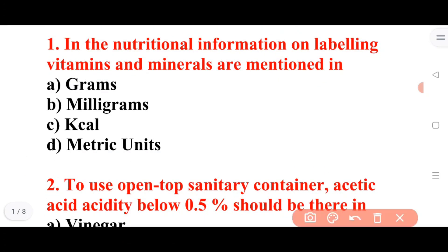First question: In the nutritional information and labeling, vitamins and minerals are mentioned in which units? Option A: grams. Option B: milligrams. Option C: kilocalories. Option D: metric units. Answer: D is the correct answer — metric units.